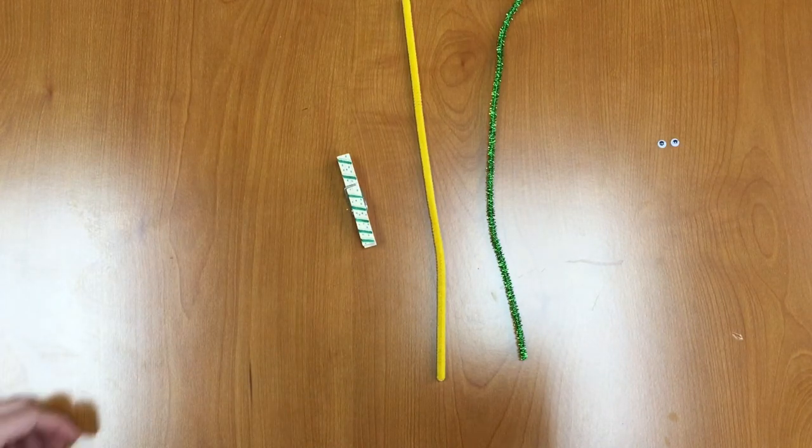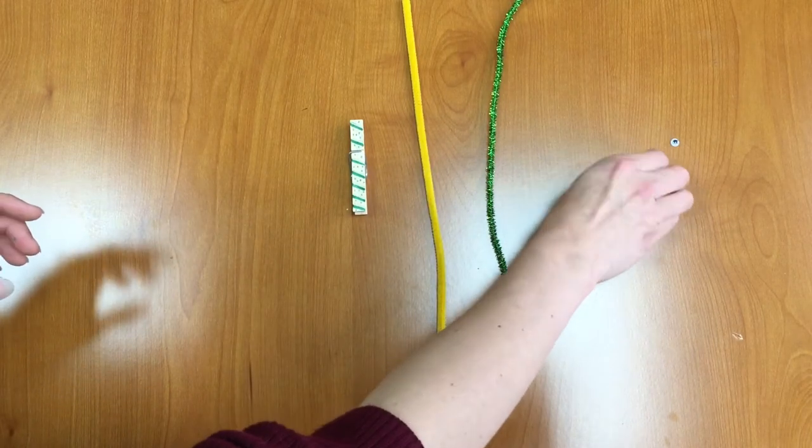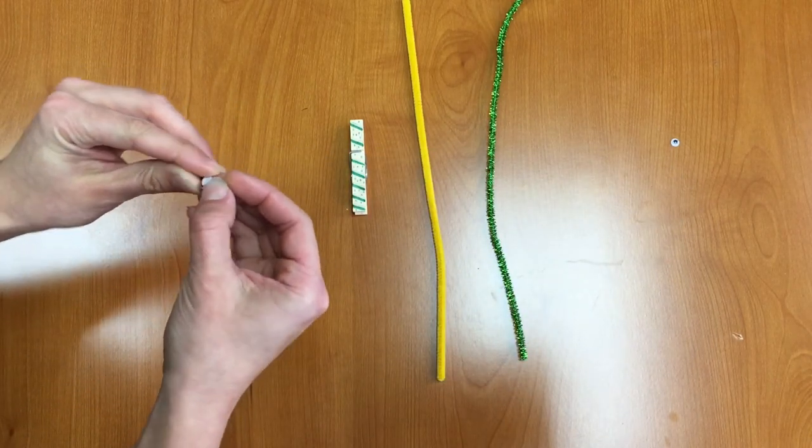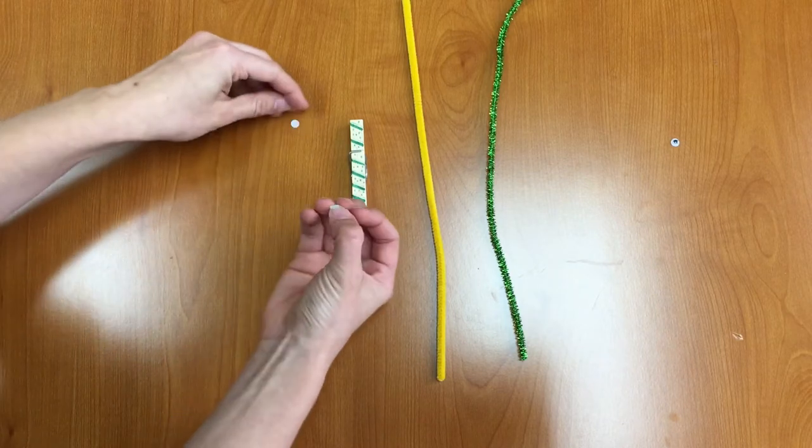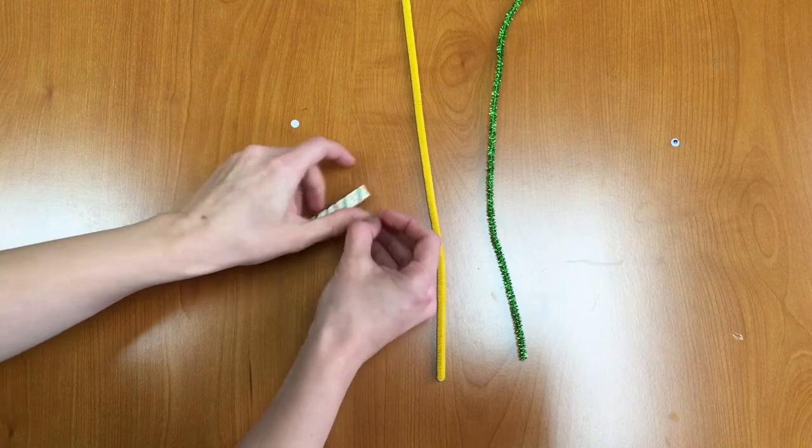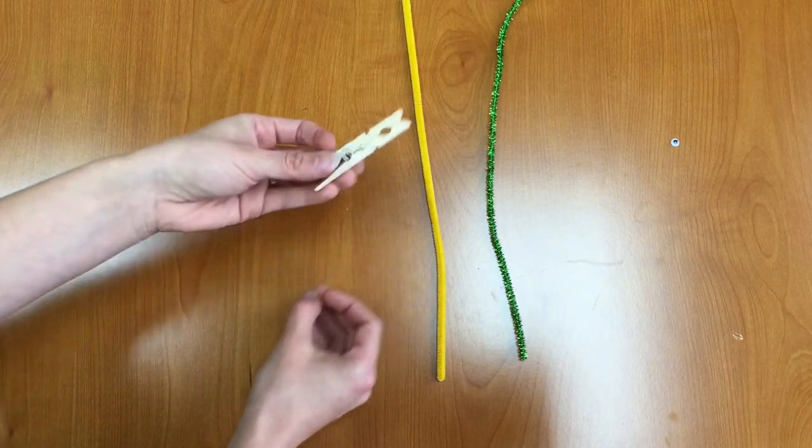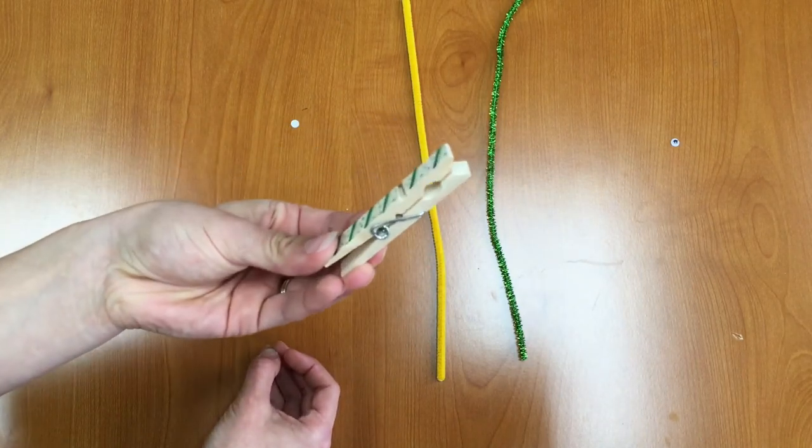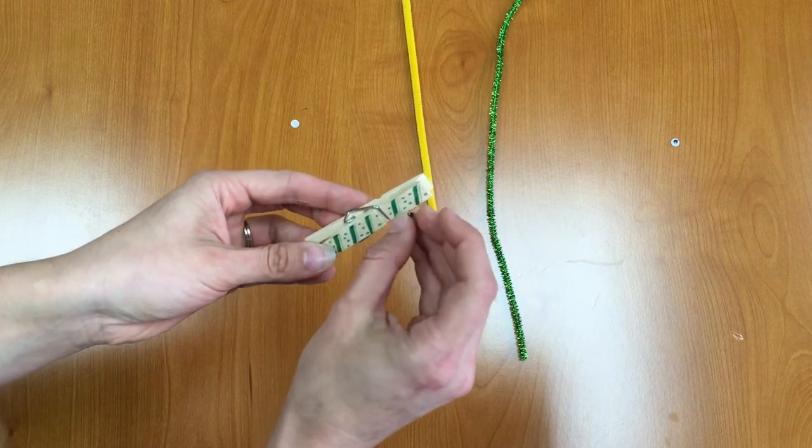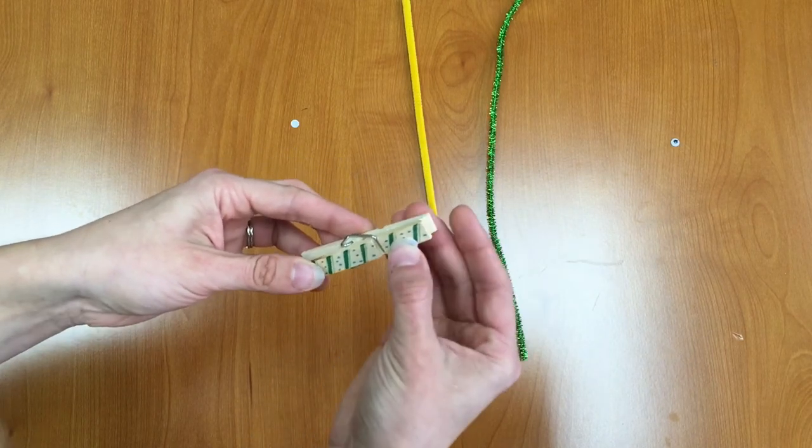Now our next step is going to be to take our googly eyes and we're going to peel off the backs of those googly eyes and we are going to stick them onto the front clippy part of our clothespin. So as you can see my clothespin opens like that. We're going to put our googly eyes right there where the mouth would be. Kind of looks like a mouth.